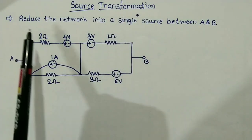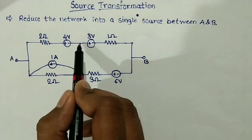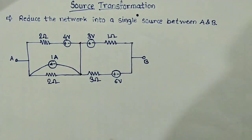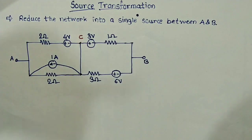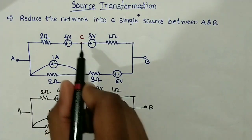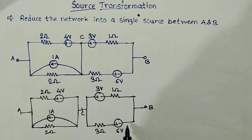Here we have to reduce this network into a single source between point A and point B. You can see that between these two points, no element is connected. Therefore, this is the same point and we can simplify the circuit. The redrawn circuit will look like this — we have simply redrawn it and the simplified diagram will look like this.